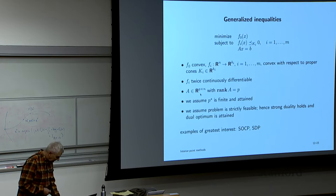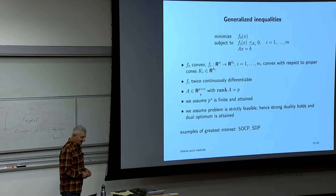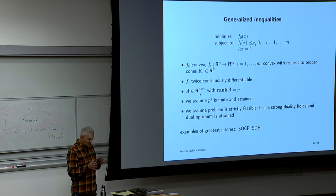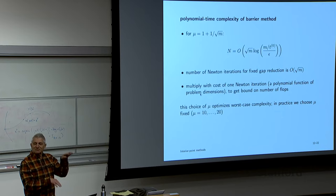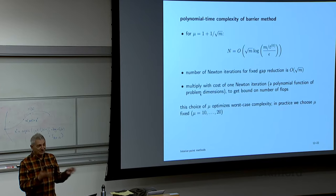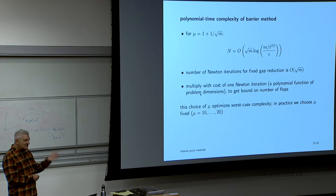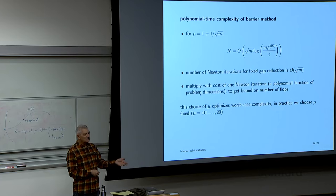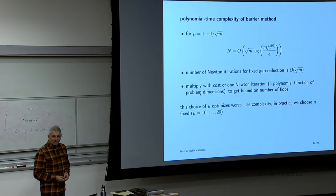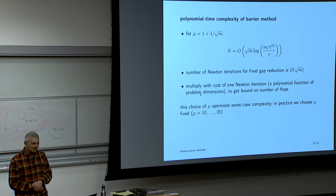There's a leapfrog dynamic between theory and practice: practitioners implement something unjustified by theory that works better, test it on thousands of problems, then about five years later theorists prove a simplified variant is polynomial time. By then practitioners have moved on again. Theory and practice are only in sync for brief periods.